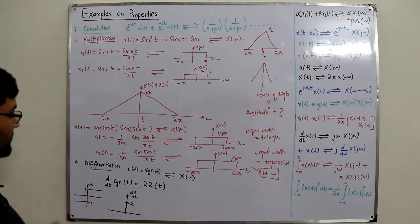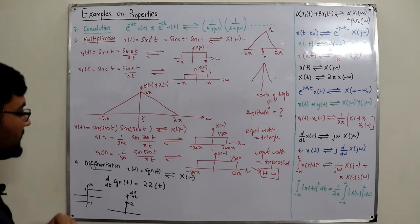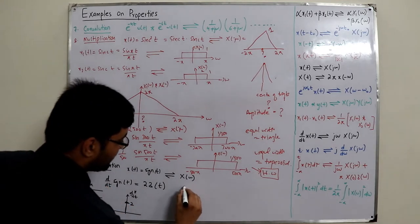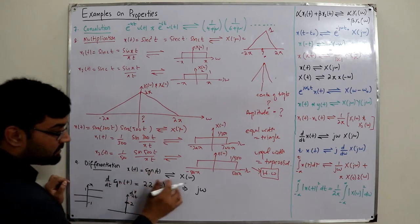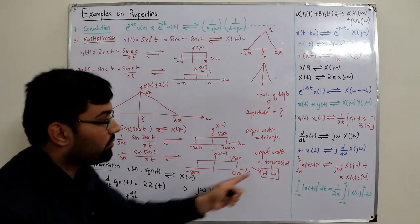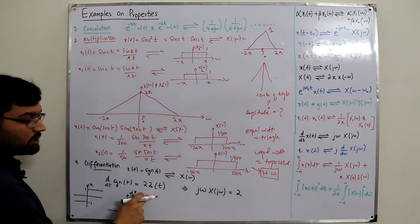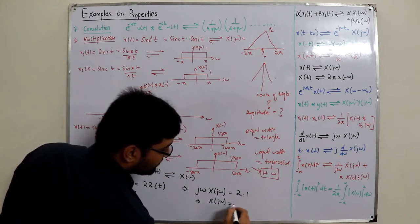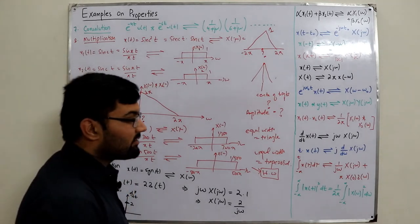Taking the Fourier transform of both sides: the derivative in time corresponds to multiplication by jω, so we get jω · X(jω) = 2 · 1. The Fourier transform of δ(t) is 1, giving us X(jω) = 2/(jω), which is the well-known result we have already proved.